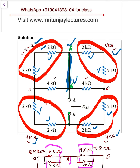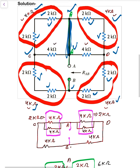Now redraw the circuit. We have point A and point B, and we label this point C and that point D. Four kilo ohm and four kilo ohm are in parallel — so 4 kilo ohm from A to C and 4 kilo ohm from A to C. Similarly, A to D is 4 kilo ohm and A to D is 4 kilo ohm.